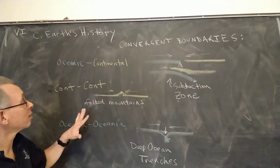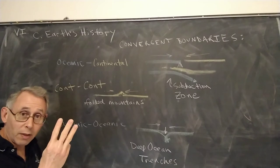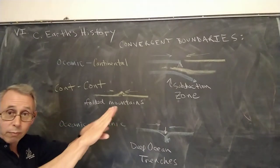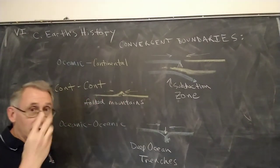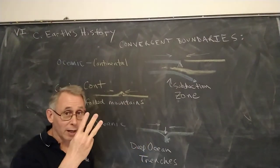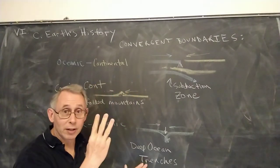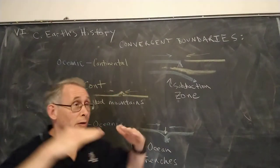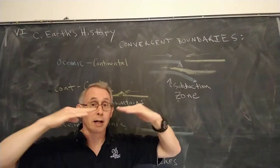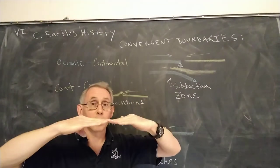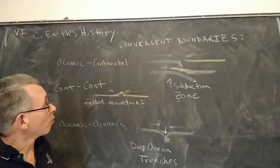Those are the three possibilities for convergent boundaries. Remember, there are three different types of plate boundaries: transform, just going side by side; divergent, meaning they're moving apart; and convergent, meaning they're moving together. Within convergent boundaries there are three subtypes depending on the crust: oceanic-continental where one goes under the other and forms a subduction zone; continental-continental where they're both light and go upward forming folded mountains; or oceanic-oceanic where they're both dense and go downward forming deep ocean trenches.